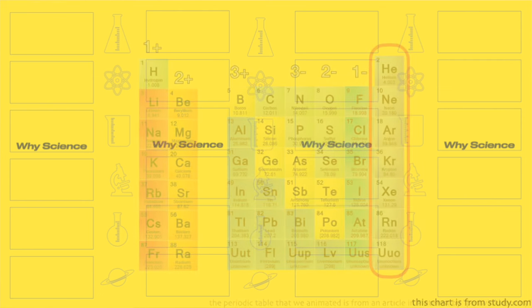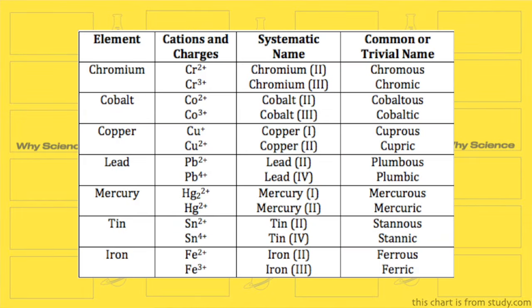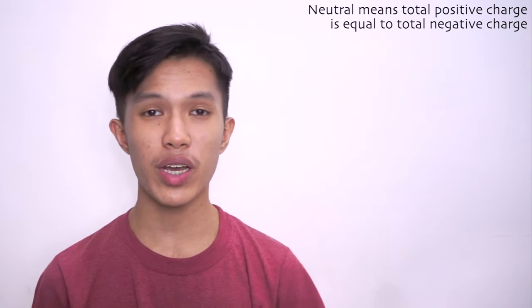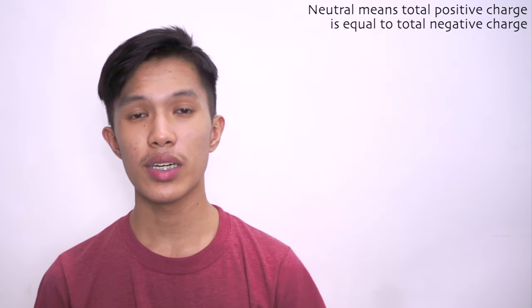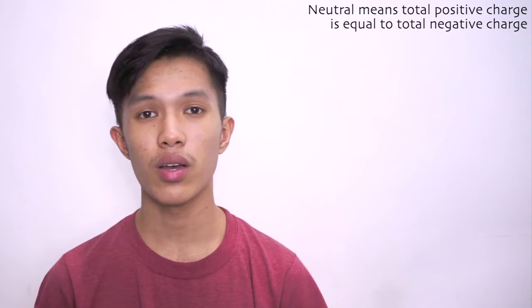Transition metals can have multiple charges and you can look at this for a complete list of the most common charges. Ions form ionic compounds to become neutral — in simpler words, the charges must add up to 0.